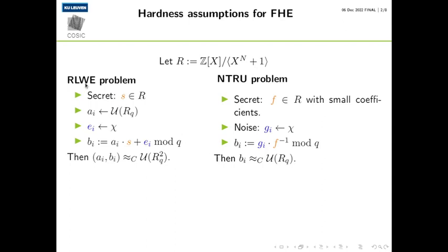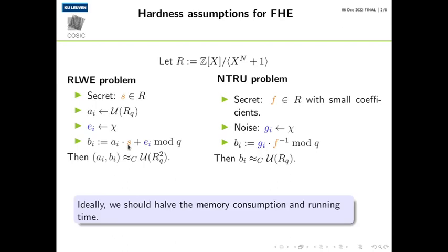So if we could somehow replace the RLWE problem by the NTRU problem in these FHE schemes, the intuition is that we should use half of the memory and maybe half of the running time.